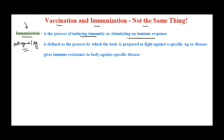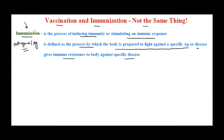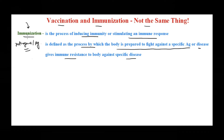We want our immune system to get resistance against a certain disease. A process of inducing immunity or stimulating an immune response is called immunization. It's a process by which the body prepares itself to fight against a specific antigen or disease. The process of acquiring that immune resistance against a certain pathogen or antigen is immunization.